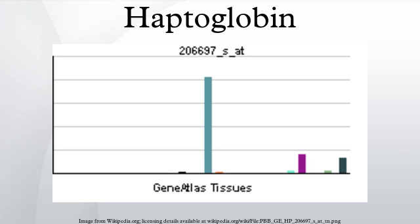Hp has a protective influence on the hemolytic kidney. Some studies associate certain haptoglobin phenotypes with the risk of developing schizophrenia.